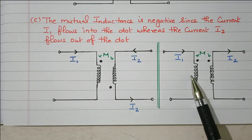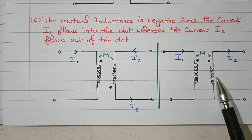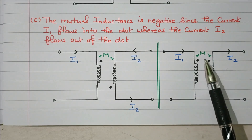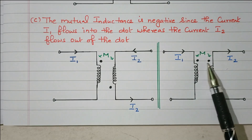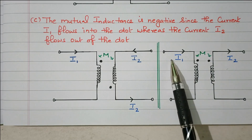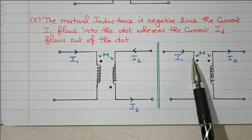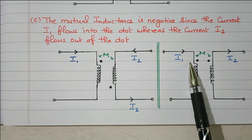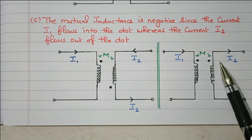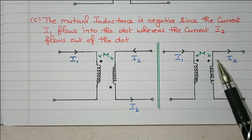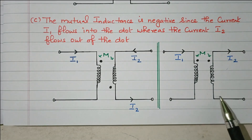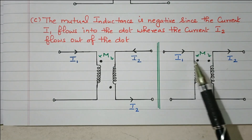In another sub-case, consider coils L1 and L2 with dots at the upper end in both coils. Current I1 in coil one enters the dotted end, but current I2 is leaving the dotted end — meaning I2 enters the undotted end. So both are different, and this mutual inductance will also be negative.